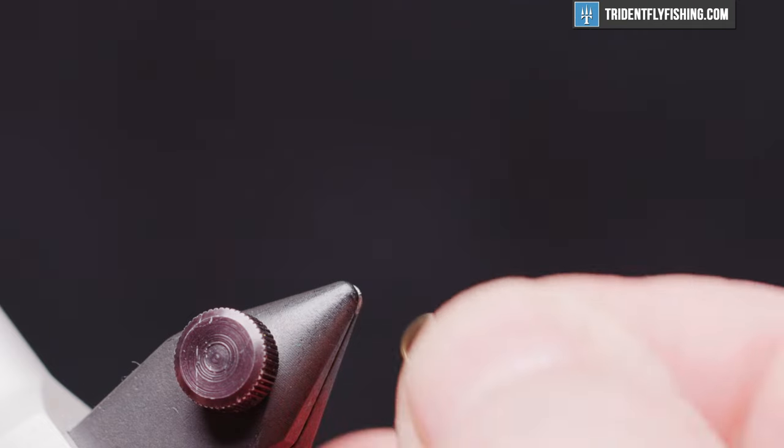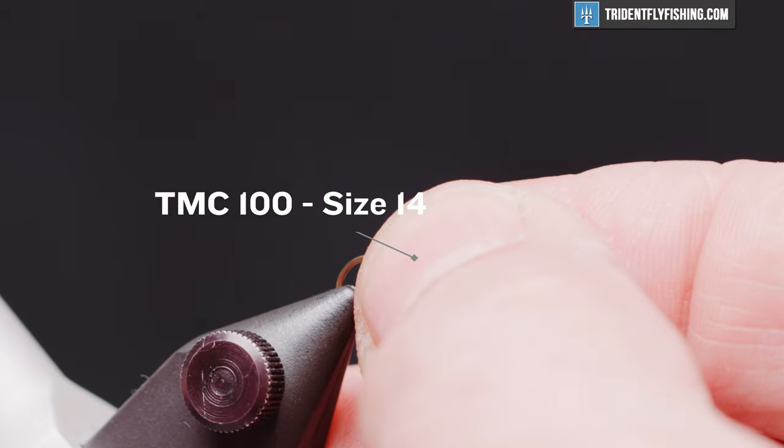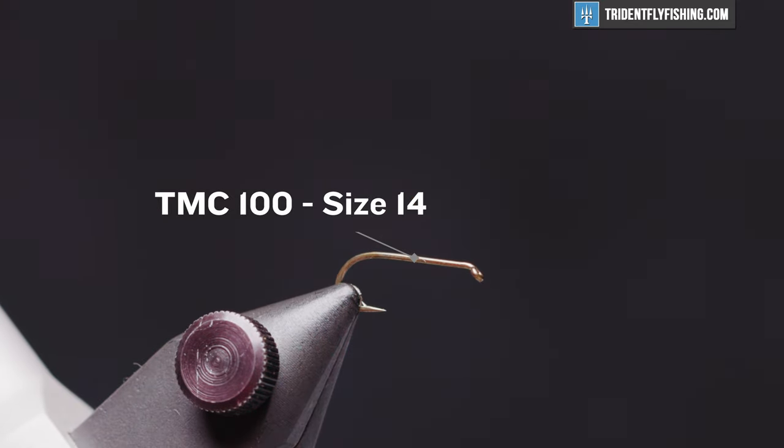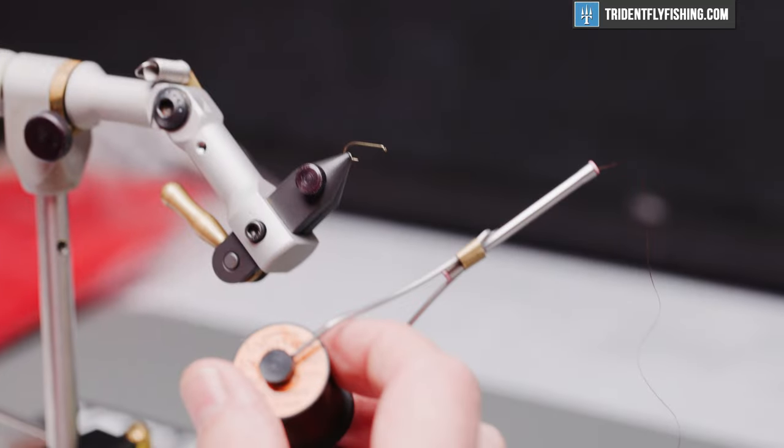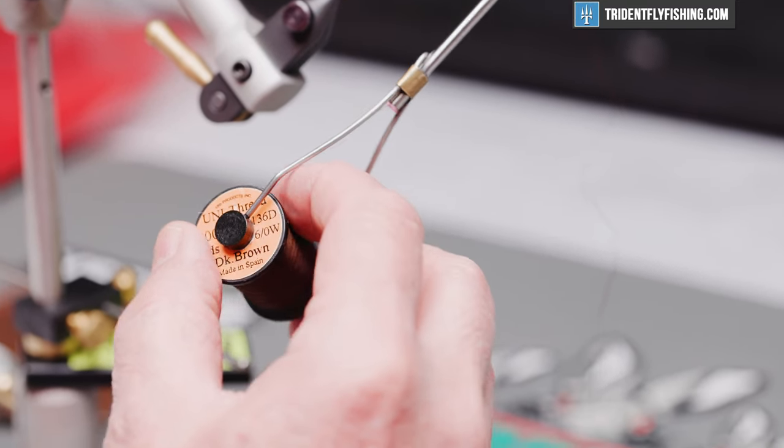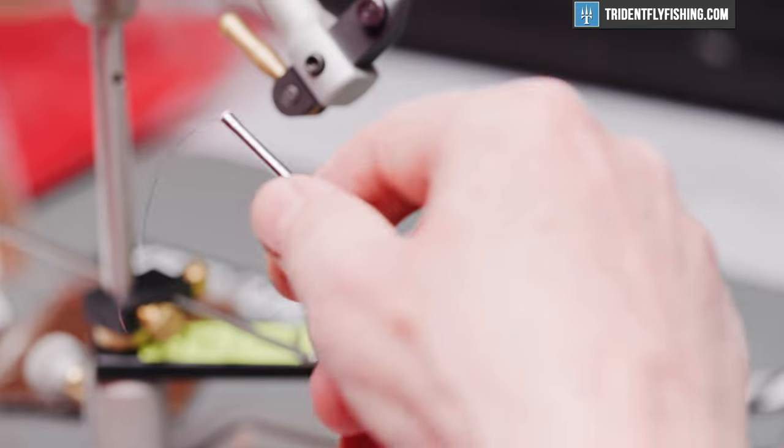Our hook today is a TMC 100 size 14. That's their standard dry fly hook. The thread we're going to use is a uni-thread 6-0 in dark brown.